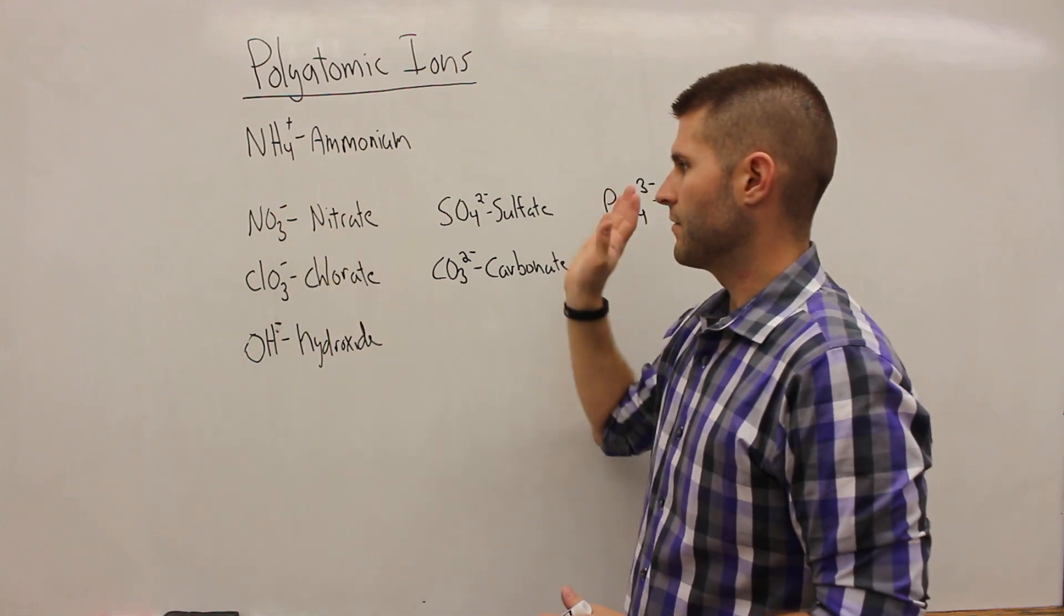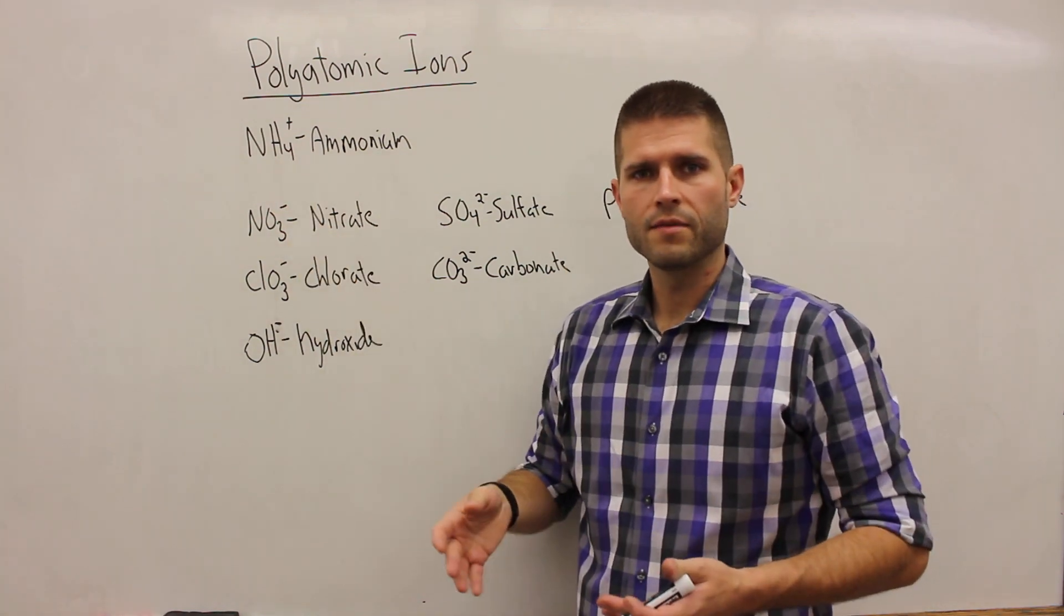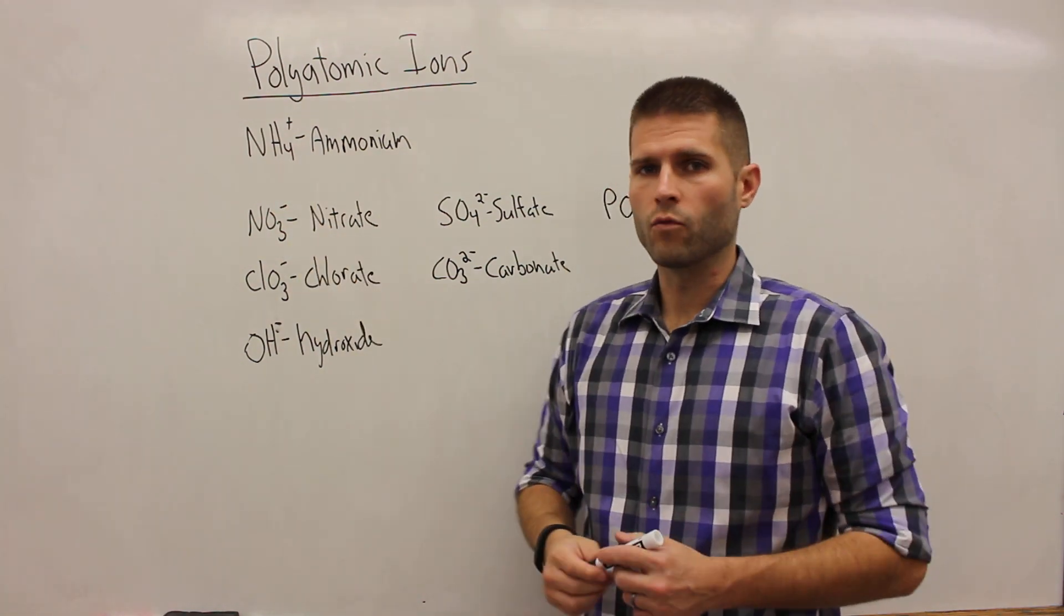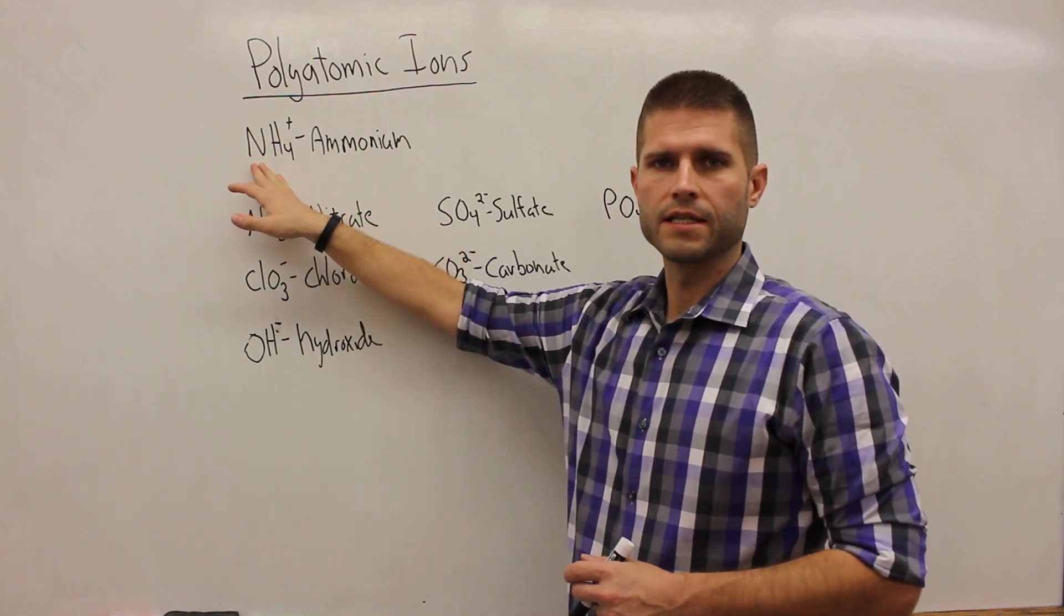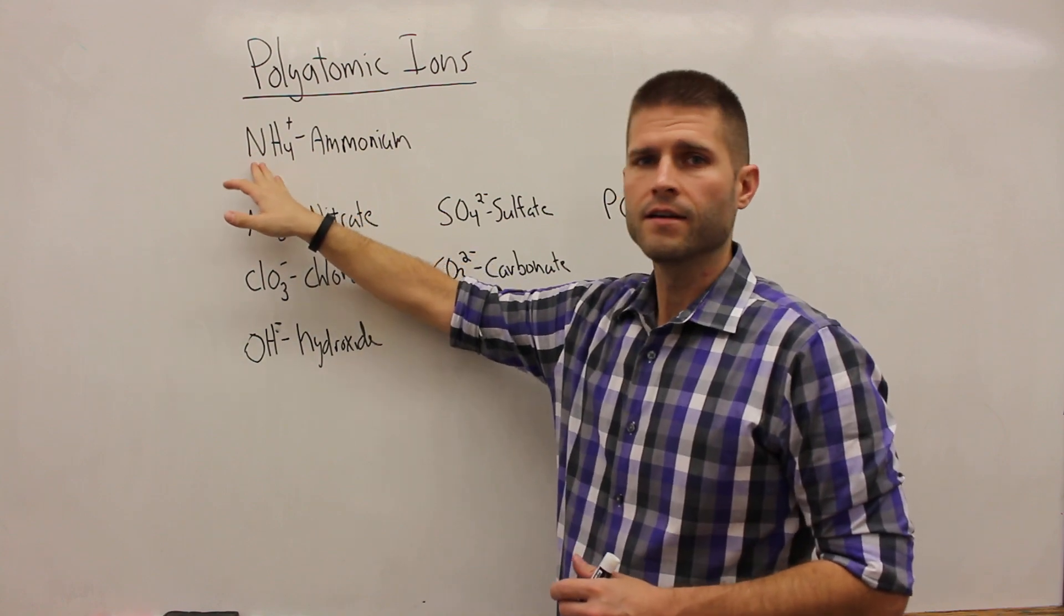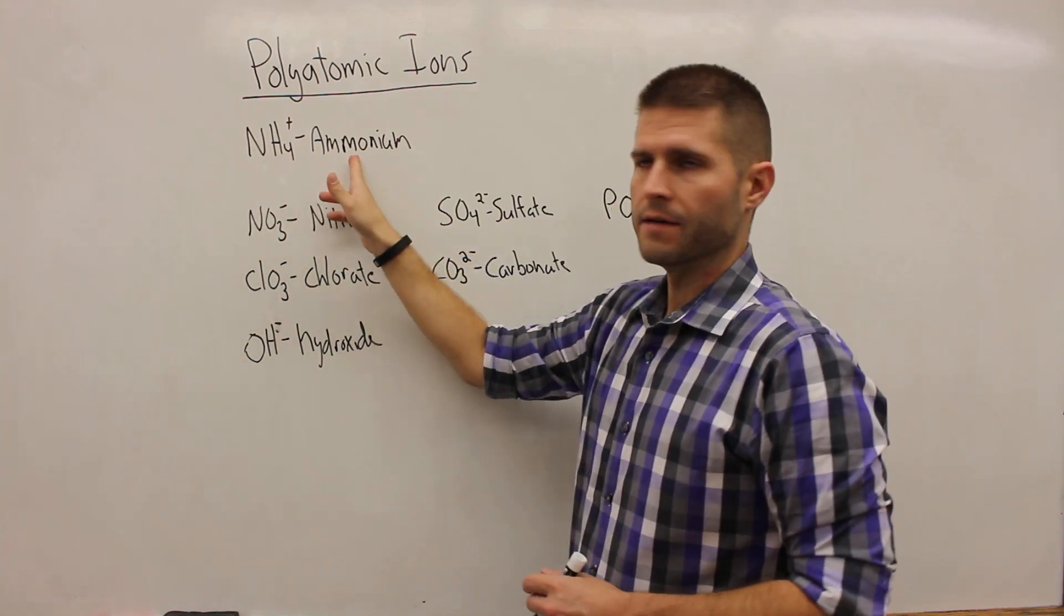So let's quickly go through these seven polyatomic ions, how we name with them, how we write a formula with them. The first one is the only positively charged polyatomic ion, it's the only cation for our list of polyatomic ions, and that is ammonium.